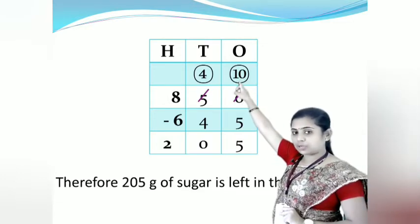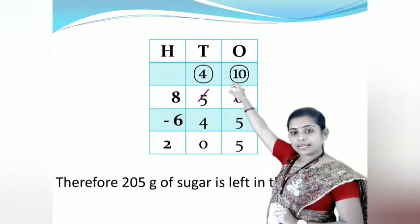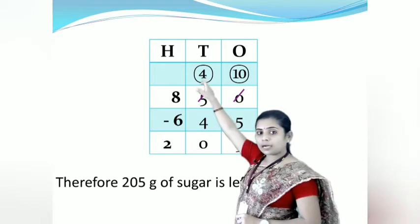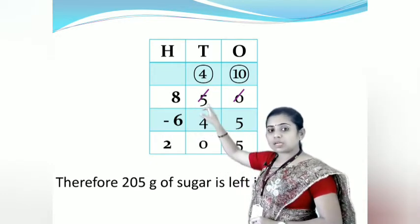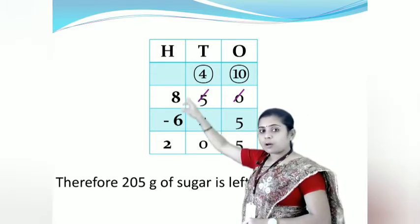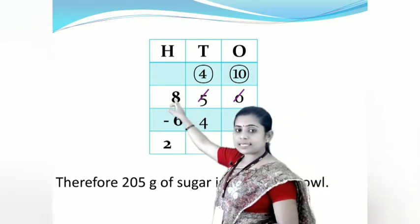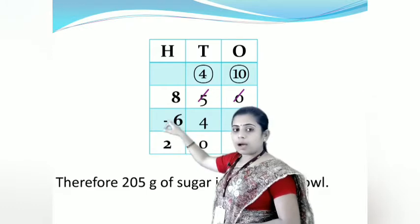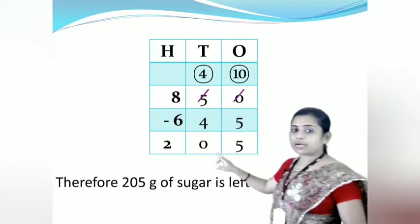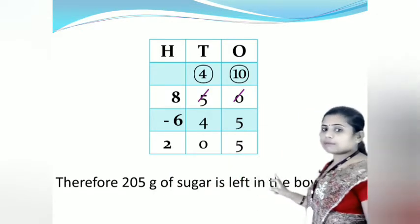10 plus 0 is 10. Now subtract 5 from 10: 10 minus 5 is 5. Next, subtract the tens digits: 4 minus 4 is 0. Now subtract the hundreds digits: 8 minus 6 is 2. So the difference is 205. Therefore, 205 grams of sugar is left in the bowl.